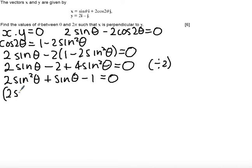So this can be broken up. I could have 2 sin theta and sin theta. It can go straight into brackets since we've got 2 as a prime number as a coefficient and minus 1 as a prime number as a coefficient. Nice and straightforward to factorise.